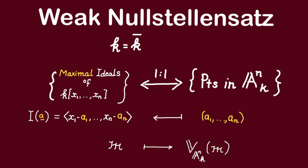Thus, we have a bijective correspondence between points of the affine space. That is the content of the weak Nullstellensatz.